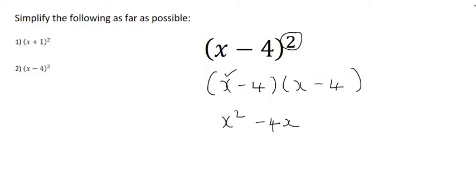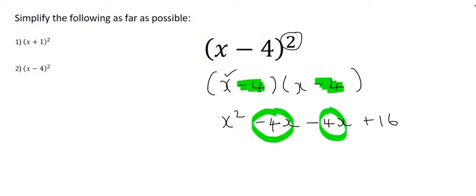We've used that x, so the next step is to use this minus four with this x, which gives minus four x, then multiply minus four with minus four to get positive 16. We look for like terms: minus four x and minus four x, so we have x squared minus eight x plus 16.